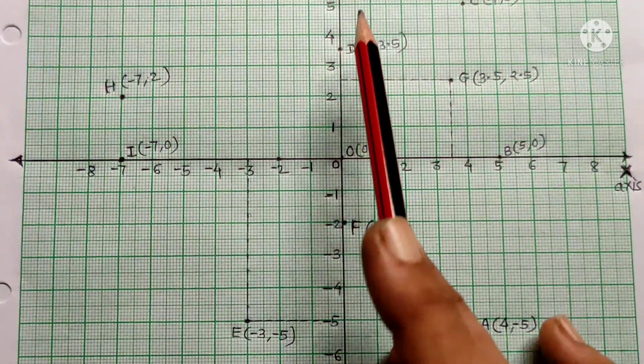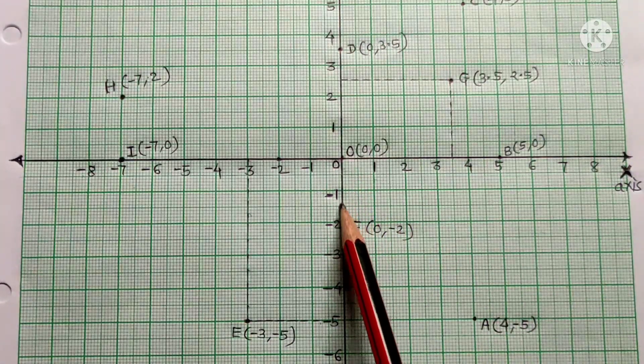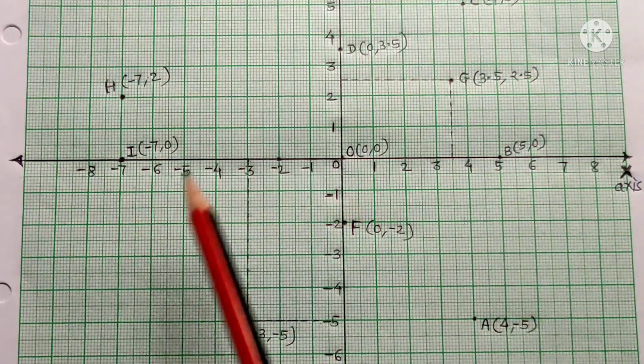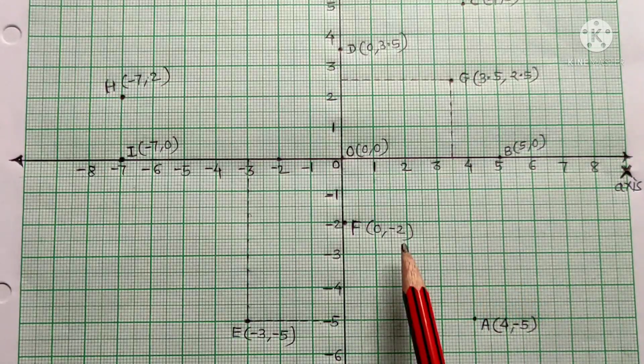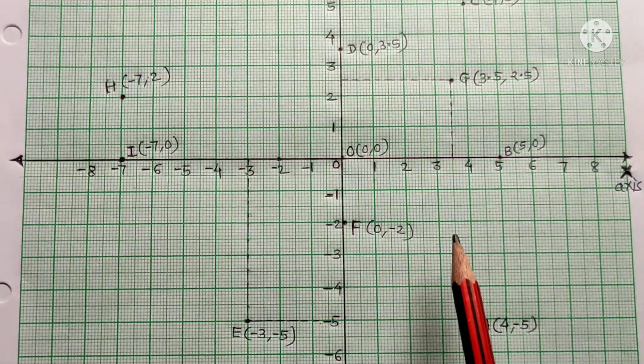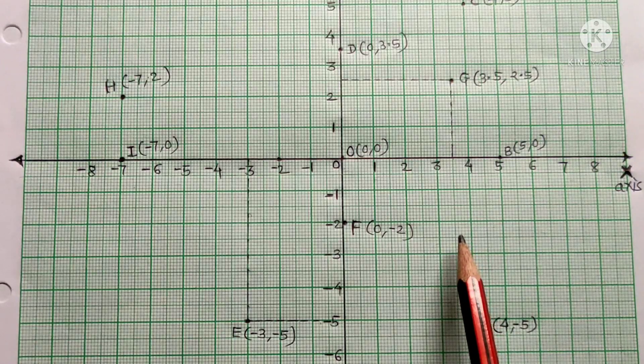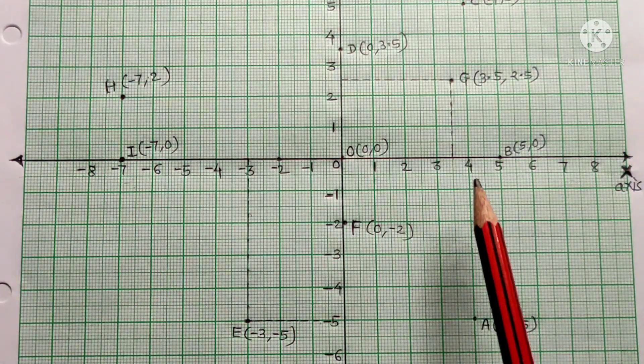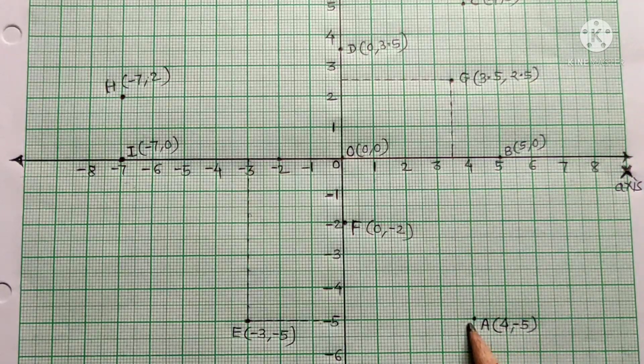You can still continue marking even if the graph doesn't show all numbers. Even at 7, you can still continue. We have minus 7, so this number is given. So when plotting points, keep this in mind. Let me plot point A. Point A is (4, -5).